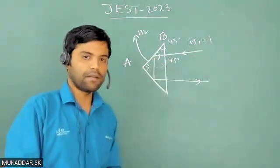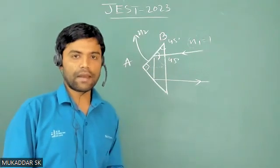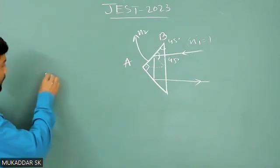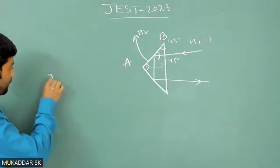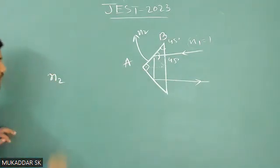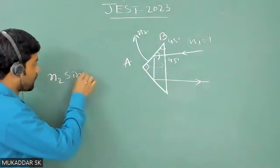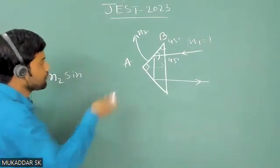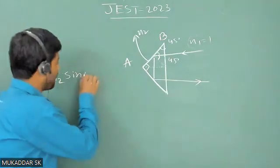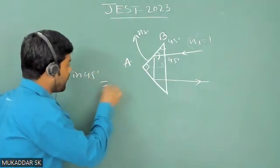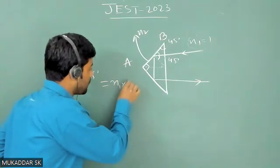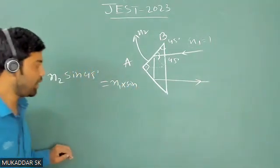To get that light beam totally reflected here, you will have total internal reflection, and that will happen at critical angle. So if we apply Snell's law at critical angle, I will say that n2, the refractive index of the prism, into sine of θc. θc is 45 degrees here. And you have total internal reflection, so you have n1 into θr, that is 90 degrees.